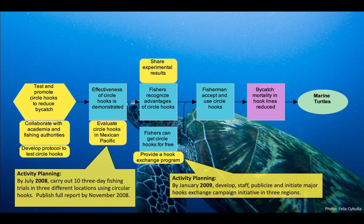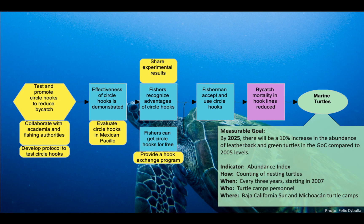This activity planning shown in the yellow boxes was used to develop the project's action plan. It identifies the activities they plan to do and when, to achieve these desired results. This slide shows how the team used their results chain to define their long-term goal for turtle conservation. In the green box, you can see that if their intervention was effective, they expected to achieve a 10% increase in turtle abundance by 2025 as compared to 2005. To assess progress towards this goal, they also identify what they will measure, how, when, and where in their monitoring plan.